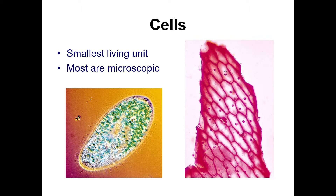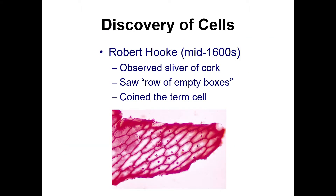The discovery of cells occurred in the mid-1600s by Robert Hooke. He did that by looking at a sliver of cork — something you'd put in a bottle. He saw rows of empty boxes when looking through a microscope, and so he coined the term 'cell' to name those things.